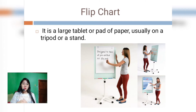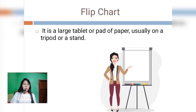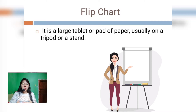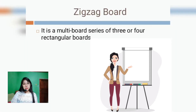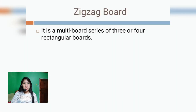The next example is the flip chart. It is a large tablet or pad of paper, usually on a tripod or stand. It is especially used when teaching children to read or when identifying pictures or photos.